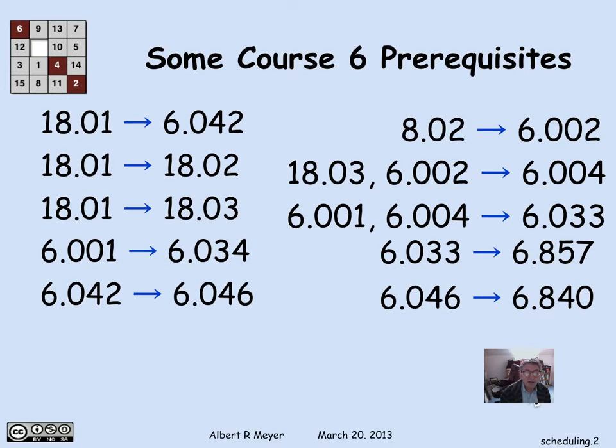So here's a chart of a selection of course six prerequisites, some of them obsolete, but they serve the purposes of being an illustrative example. And the little arrows here are indicating arrows in the digraph.